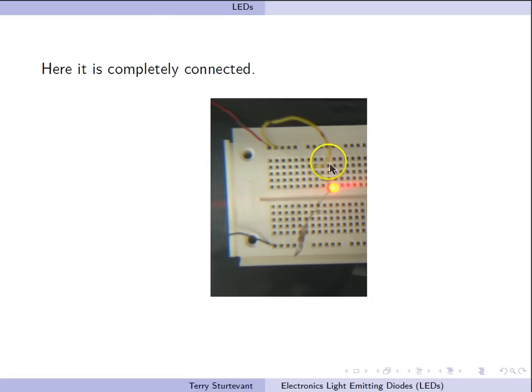So here we have the yellow wire which represents our signal. When it is put to power, the LED lights up. If this signal went to ground, the LED would not light up.